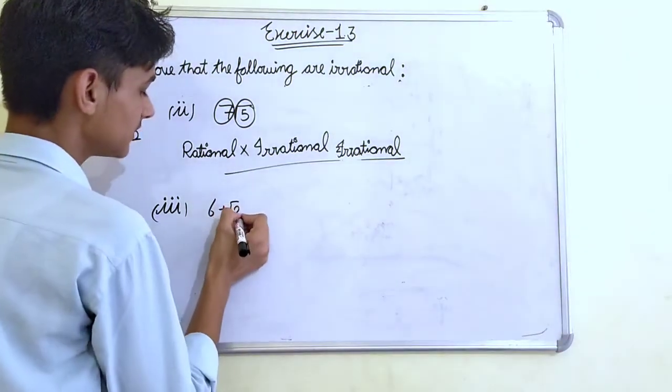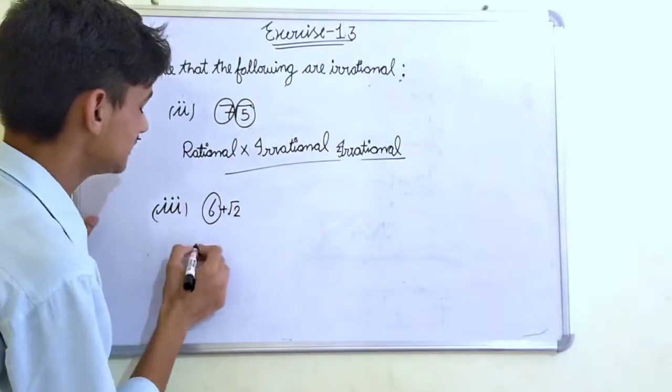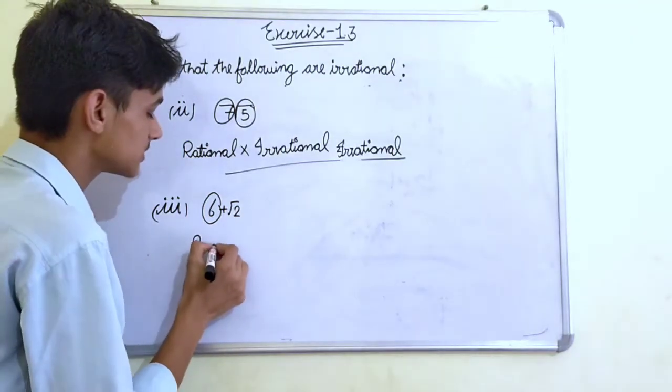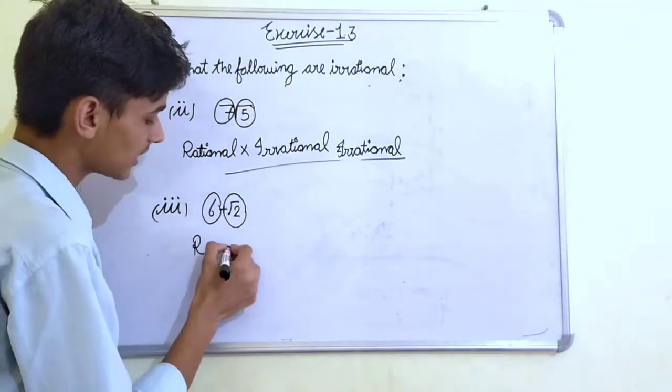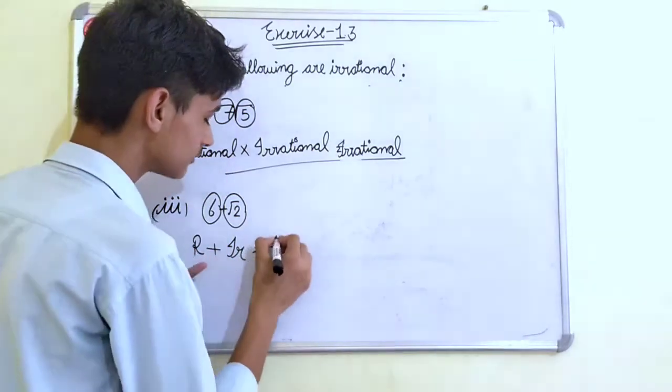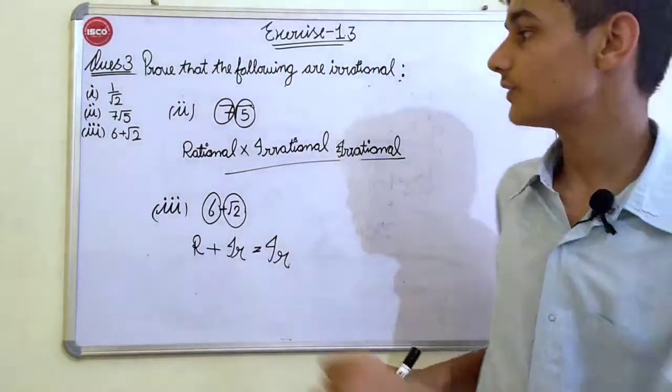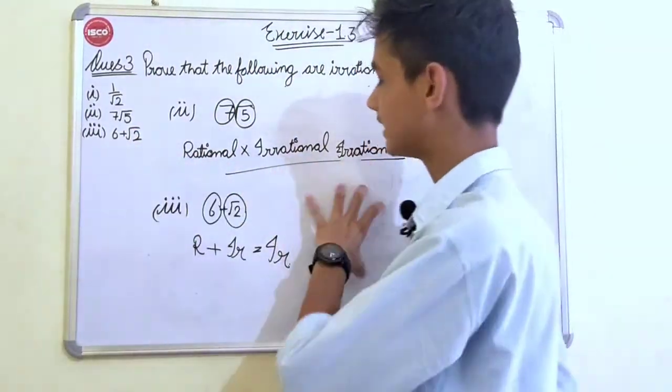Same thing we are going to do with the third part. We know that 6 is a rational number plus under root 2 is an irrational number. And when irrational plus rational always gives us irrational number. So we have proved that 6 plus under root 2 is an irrational number.